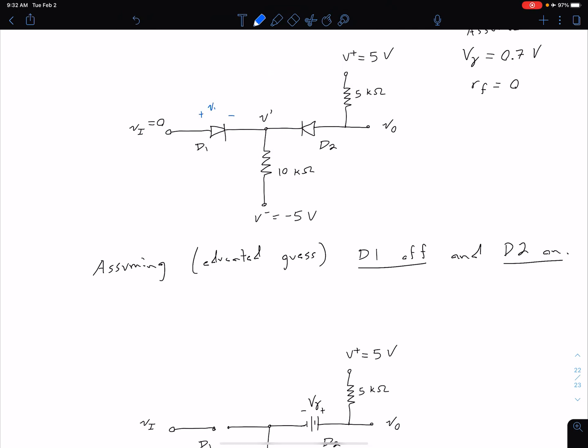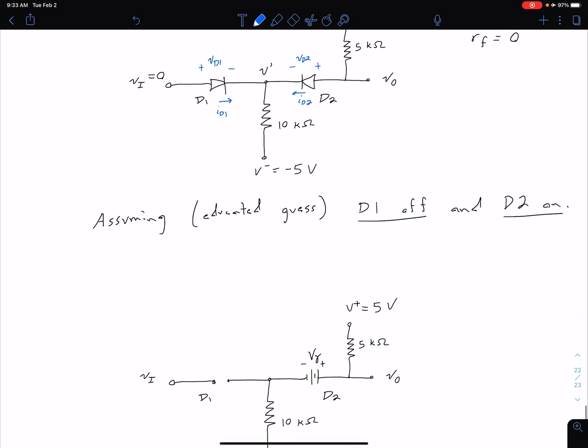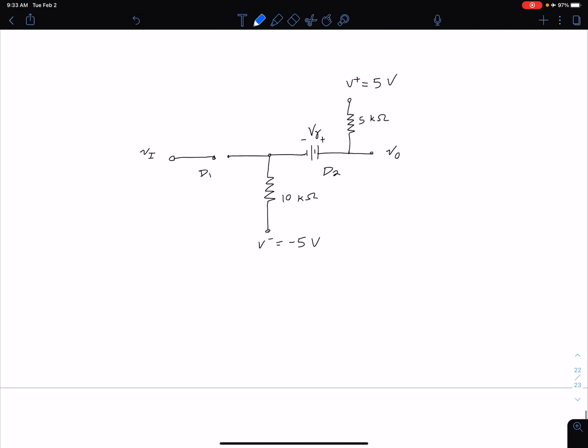So of course our diode voltage is defined as positive on our p side for a normal p-n junction diode. Current is in the direction of the arrow so I_D1. Same thing over here for our diode D2 we have V_D2 and I_D2. So we have something that looks like that. So we can carry those down to here because we're going to need to evaluate some of these when we're checking our assumptions.